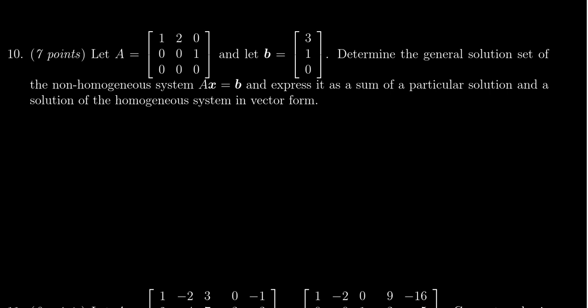We're given a matrix A which is a 3 by 3 matrix given as 1 2 0, 0 0 1, and 0 0 0, and we're given a vector b in R3: 3 1 0. We're asked to determine the general solution of the non-homogeneous system Ax equals b and express it as a particular solution and the solution of the general solution of the homogeneous system in vector form.